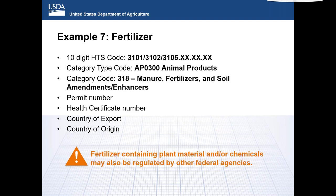Example seven is about fertilizer. Many tariff codes may apply, and the correct category code for fertilizer containing animal material would be 318. Many fertilizers containing animal products such as blood or bone material typically require a permit, so the permit number and health certificate number should be declared. Please note that fertilizer which may contain plant material or chemicals may also be regulated by other federal agencies.